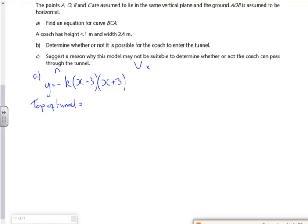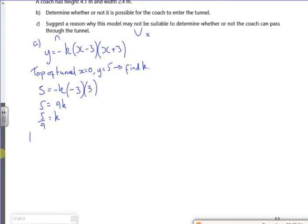tunnel is where x is zero and y is 5, and I can use this to find K. So 5 is minus K lots of, 0 minus 3 is minus 3, 0 plus 3 is 3. So 5 is plus 9K, so 5 over 9 is K. So my equation, let's give me a chance